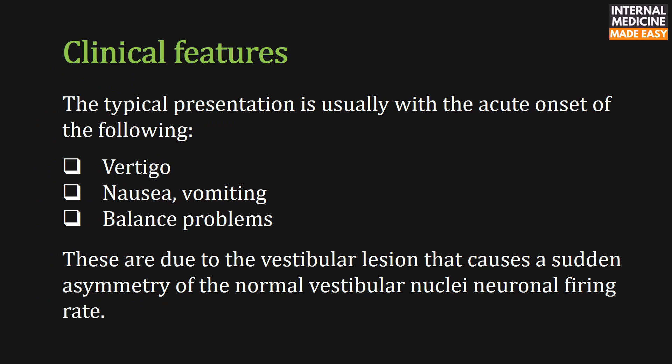The typical presentation is usually with the acute onset of vertigo, nausea, vomiting, and balance problems. These are due to the vestibular lesion that causes a sudden asymmetry of the normal vestibular nuclei neuronal firing rate.